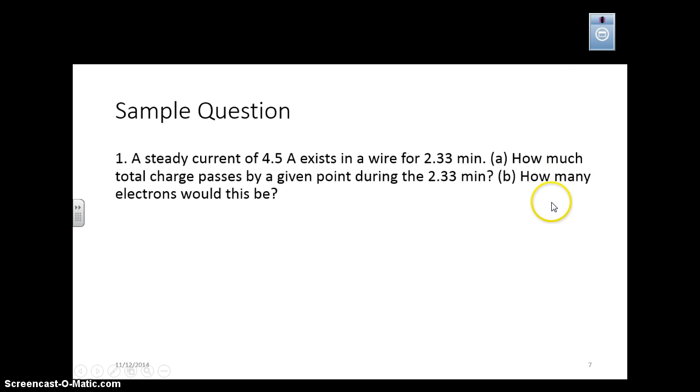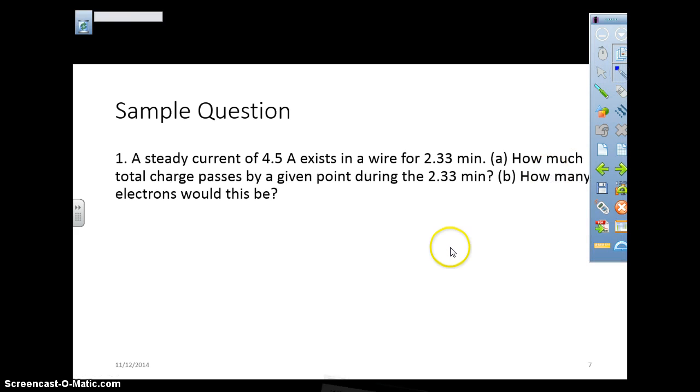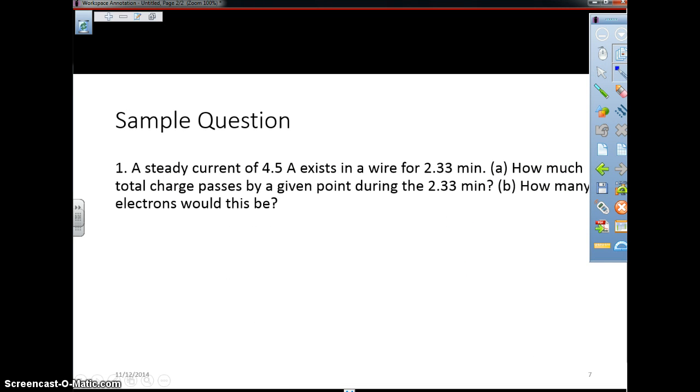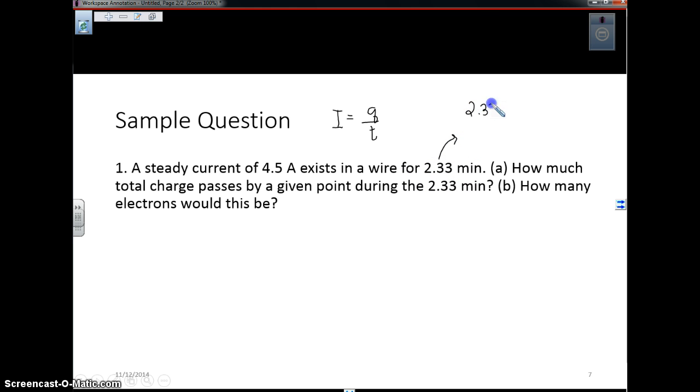Here's a sample question. We have a steady current of 4.5 amps that exists in a wire for 2.33 minutes. How much charge passes by during the given point, and how many electrons would this be? Okay, so I could solve this. We're going to be using this idea where current is equal to Q divided by T. Now T has to be in seconds. First of all, I see a red flag, and that's in minutes. So 2.33 minutes times 60 gives me my time in seconds, 139.8 seconds.